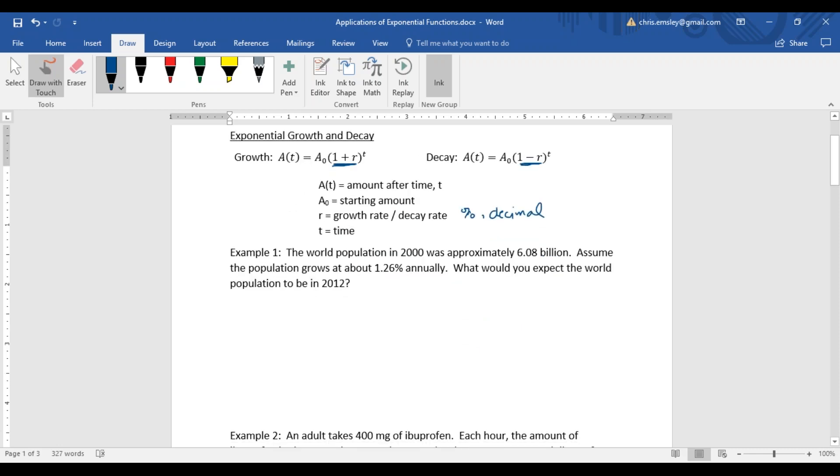In this first example, the world population in 2000 was approximately 6.08 billion. Assume that the population grows at about 1.26% annually. What would you expect the world population to be in 2012? We have a starting value, A sub 0 is 6.08 billion, the starting population in the year 2000.